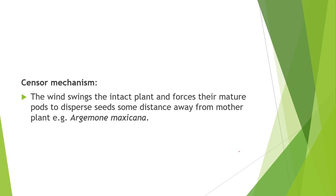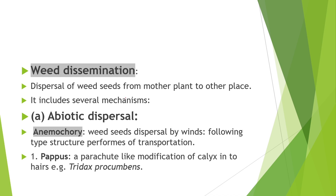Next topic is the sensor mechanism — this means that when a wind force comes, weed seeds are dispersed and mother plants are dislocated. This is generally seen in Argemone mexicana. Next topic is weed dissemination — dissemination is the dispersal of weed seeds from the mother plant to other places, and it includes biotic and abiotic dispersal mechanisms.